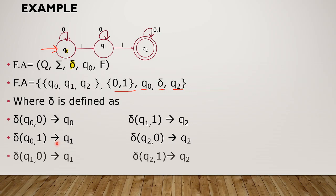Continuing with the transition values: del(Q1, 0) goes to Q1, del(Q1, 1) gives Q2, del(Q2, 0) gives Q2, and del(Q2, 1) gives Q2. This completes the example of a DFA represented as a transition system.